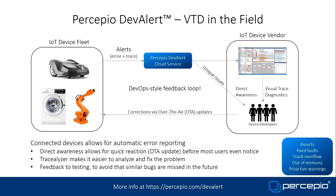DevAlert is our new service for IoT devices that allows for direct feedback from customer operation or field testing regarding runtime errors and other software events of interest. Software is rarely bug-free even at release, and the sooner you can become aware of missed bugs and fix them — perhaps via an over-the-air update — the fewer customers will be affected. DevAlert is a cloud service providing a DevOps-style feedback loop from devices back to developers, also providing traces for remote diagnostics in Tracealyzer. We provide a reference implementation for AWS, and more information is available at percepio.com/DevAlert.